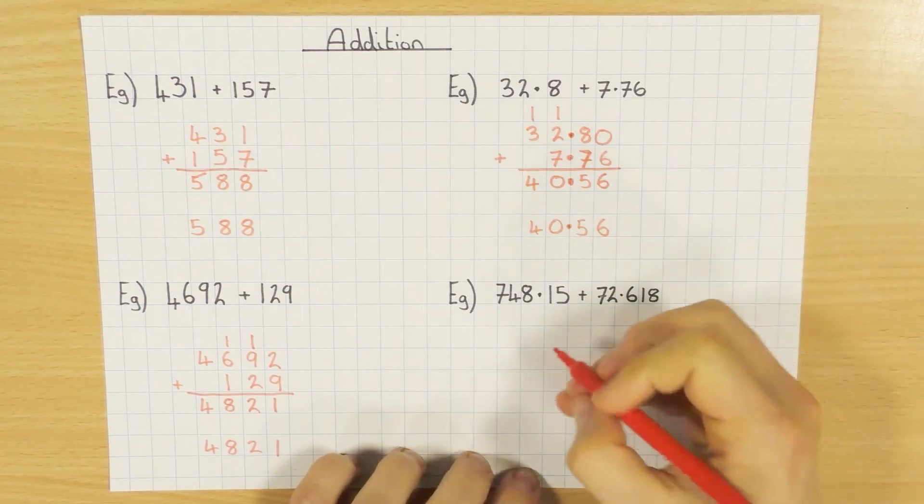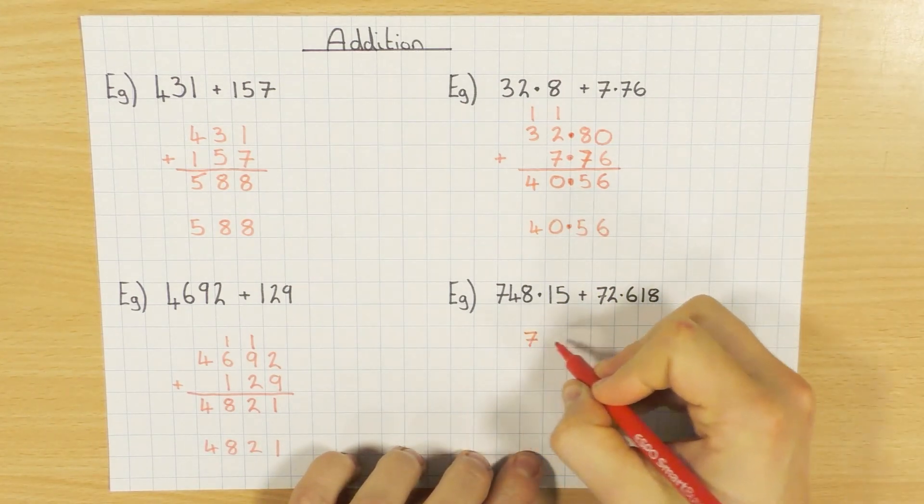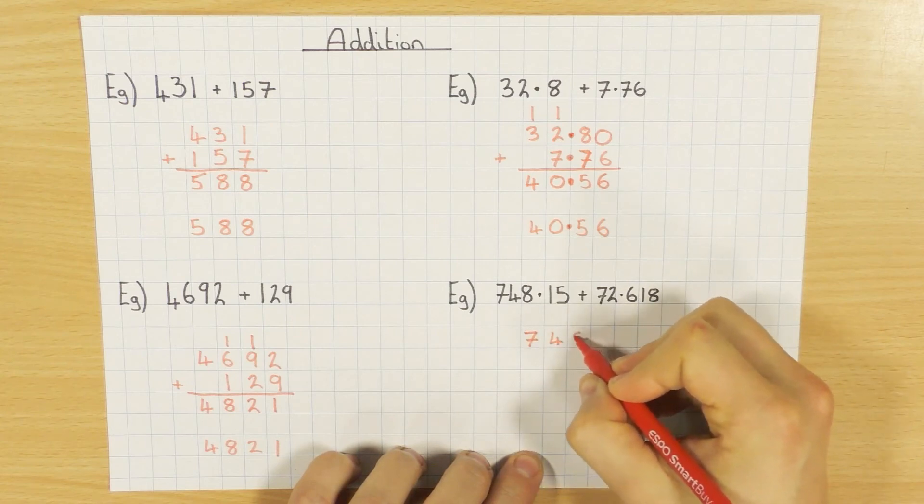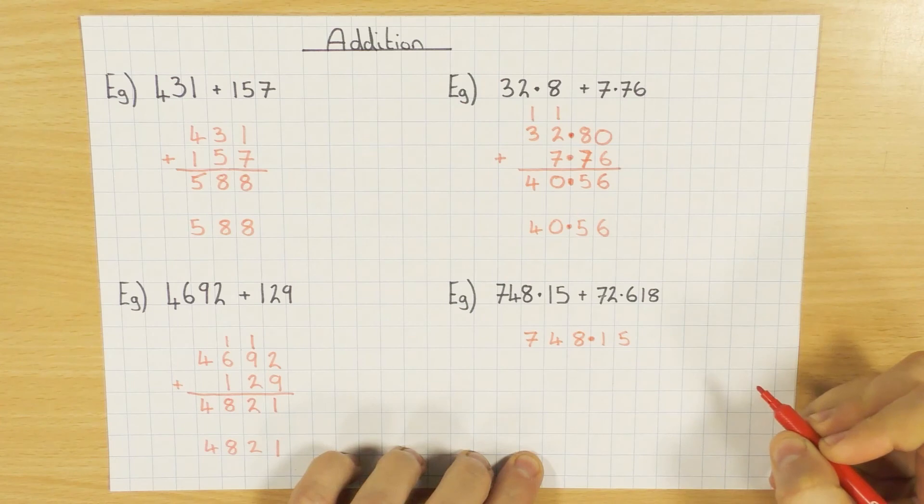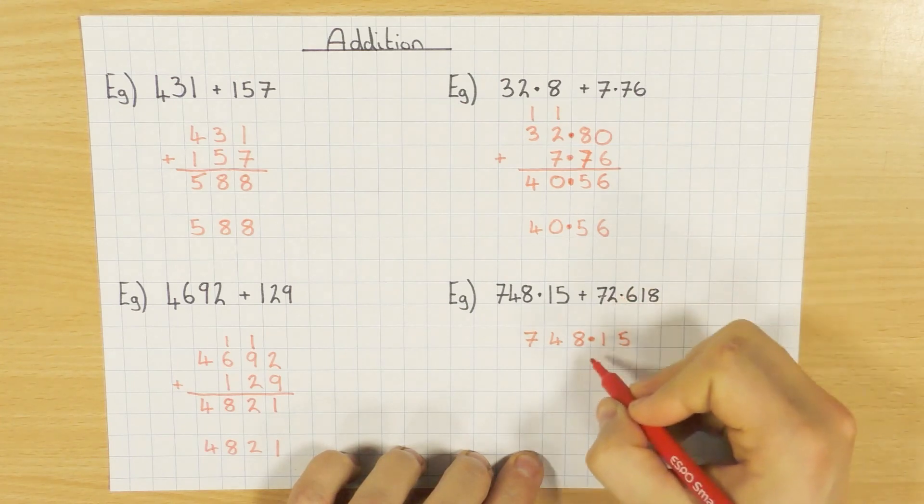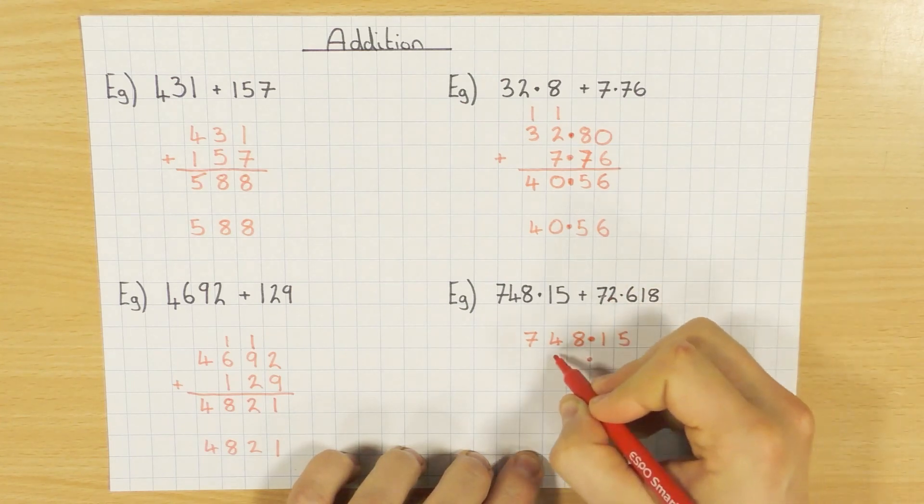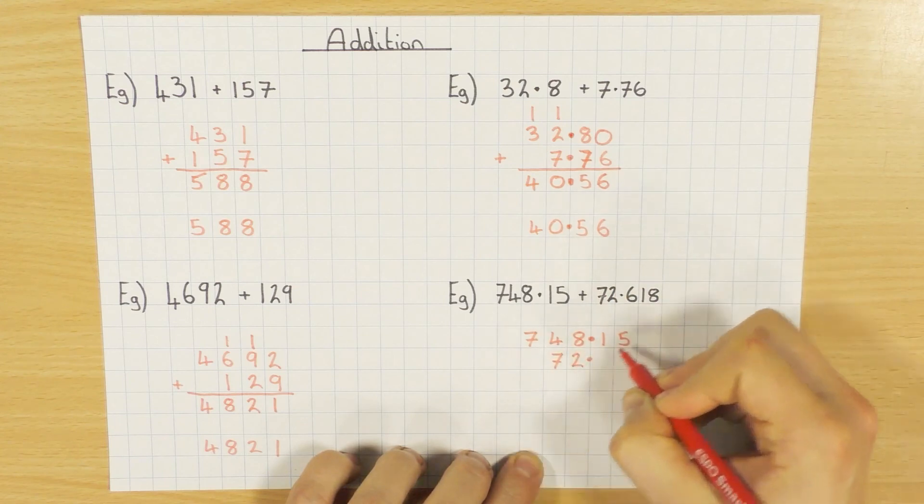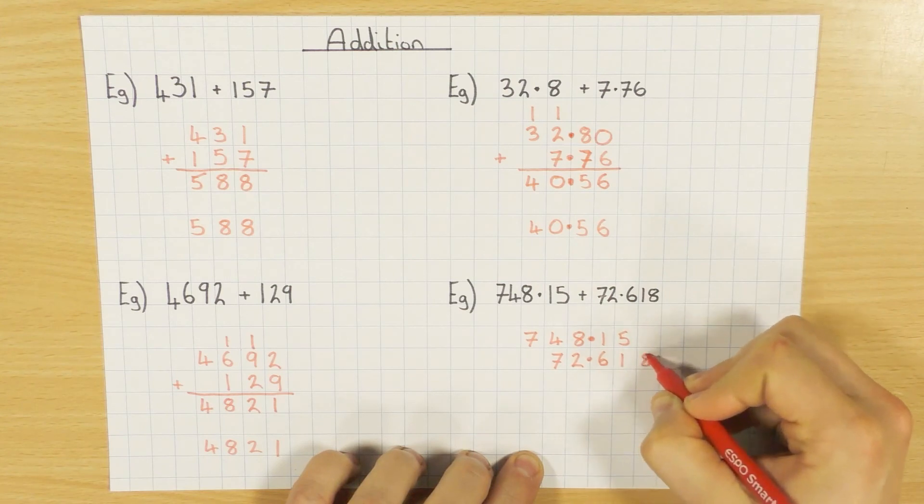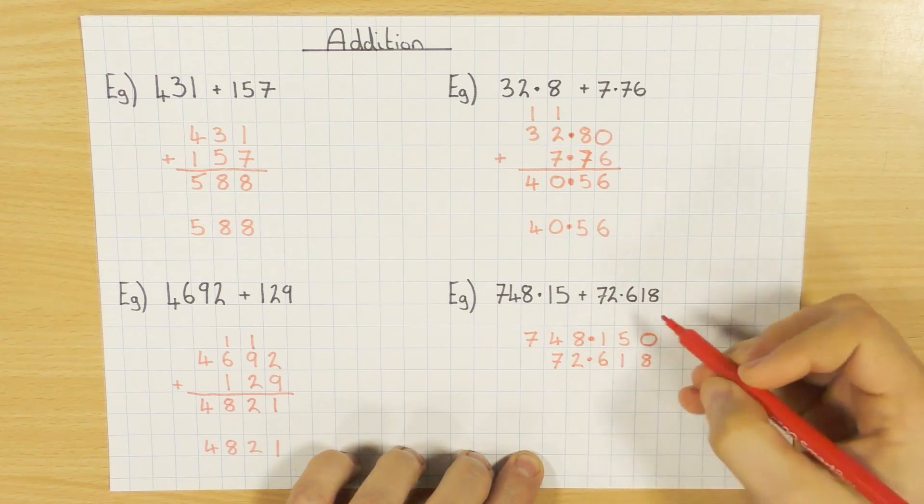And just one more to have a look at. Just slightly bigger numbers, just to illustrate the point. So 748.15. Again, line up the decimal points. All the tens and the units. So 7 is in the tens. 2 is in the units. And I've got my 0.618. Just going to fill in the 0 there.